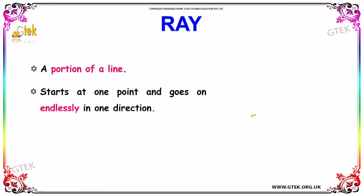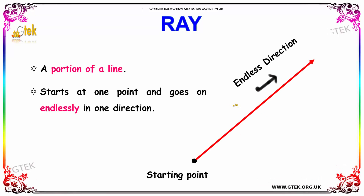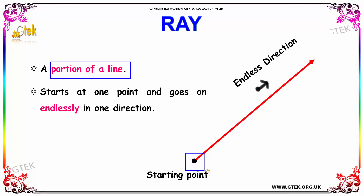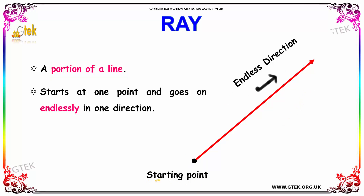Next, we are going to study about a ray. A ray is a portion of a line which starts at one point and goes on endlessly in one direction. This is the starting point and it goes on endlessly in that direction.